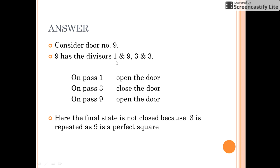So when you pass this door for the first time you open the door. On the third time you close the door. On the ninth time you again open the door. So the final state of door number 9 is not closed but it is open at the end because it is a perfect square.